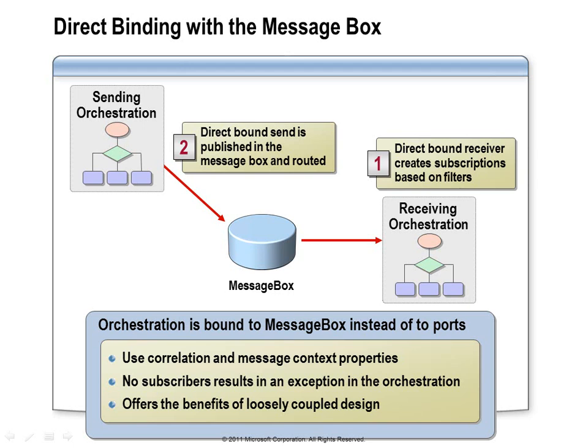One last point regarding this type of direct binding is that it gives you a way to maintain loose coupling within your application, making it easier to add and remove components as you make modifications down the road. Your orchestration is just interacting directly with the message box and doesn't know what type of component published the messages it's receiving, nor does it know what type of component processes the messages it publishes. A business function implemented as an orchestration today might be implemented as a web service call through a send port in the future, and as long as the new send port subscribes to the same properties, no further changes may be required.